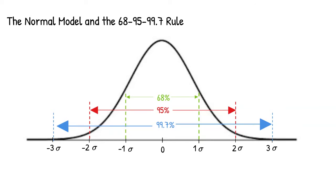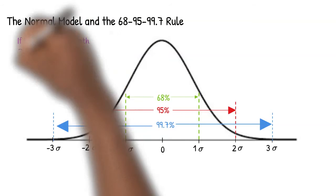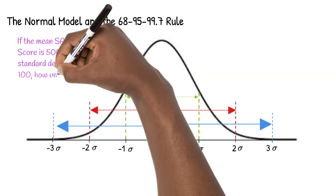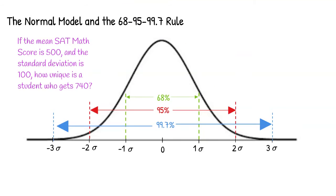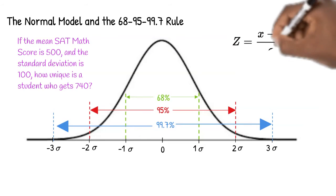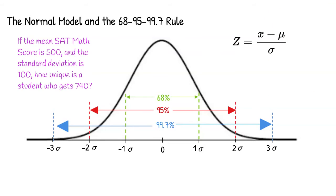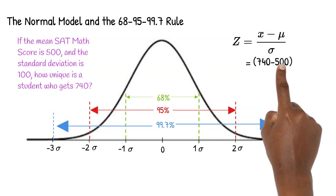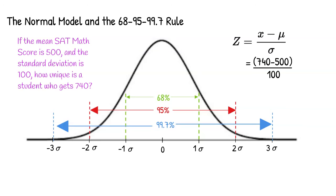Let's take a look at how we can use this information in an application. If the mean SAT math score is 500 and the standard deviation is 100, how unique is a student who gets 740 on the math SAT? To answer this question, we have to start by finding the z-score. Z is equal to the SAT score minus the mean over the standard deviation: 740 minus 500 over 100. Z is equal to 2.4.